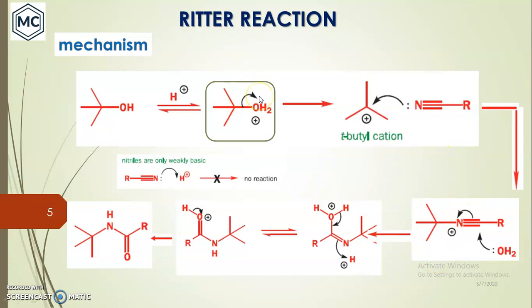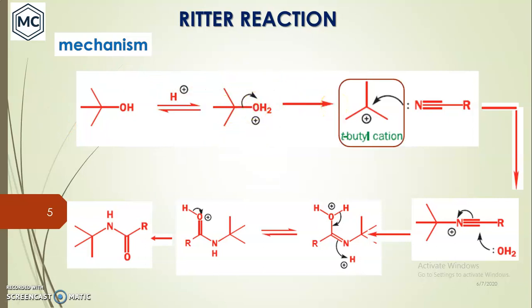This hydronium then dehydrates and kicks off from the tertiary butyl group, forming a highly stable cation — the tertiary butyl carbocation.